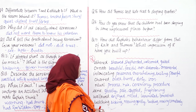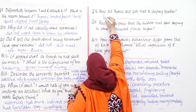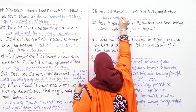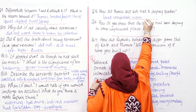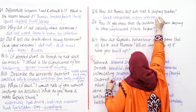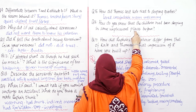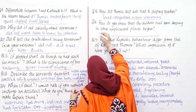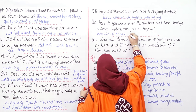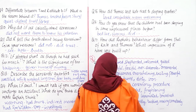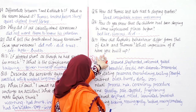Question: How did Thomas and Kate react to the sleeping quarters? They just loved it — they felt it was comfortable, warm and welcoming. Question: How do you know the children had been sleeping in unpleasant places before? It is mentioned in the paragraph that they were thinking about bed lice, worms and dirt on the sleeping places where they had slept before.